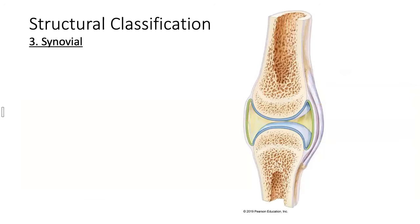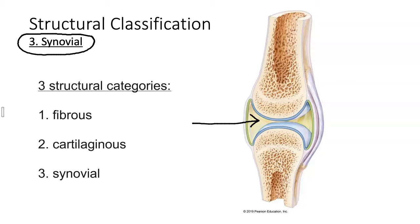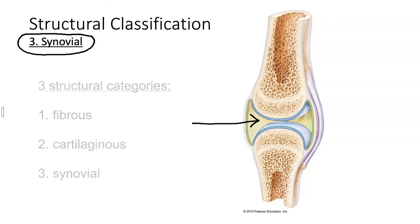A third type of joint is called a synovial joint, where the two bones meet and there is a fluid-filled cavity. To summarize the structural classification, there are three different types of joints: fibrous joints, cartilaginous joints, and synovial joints.